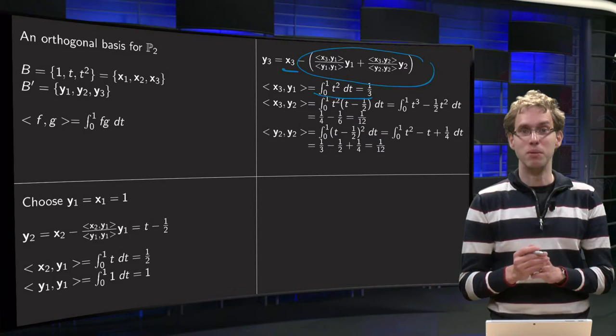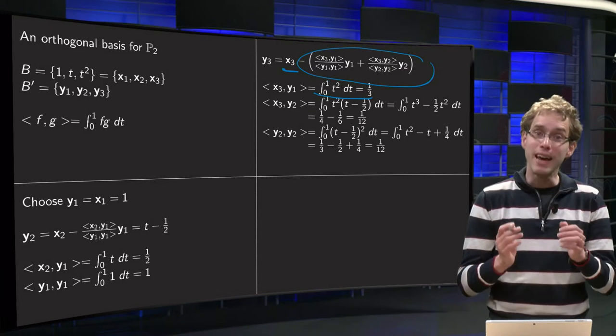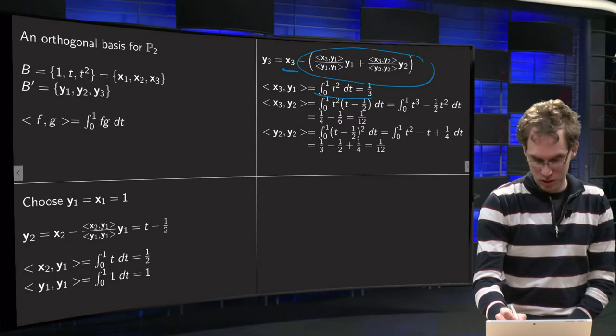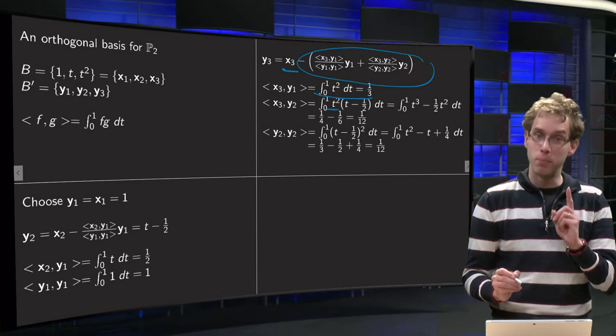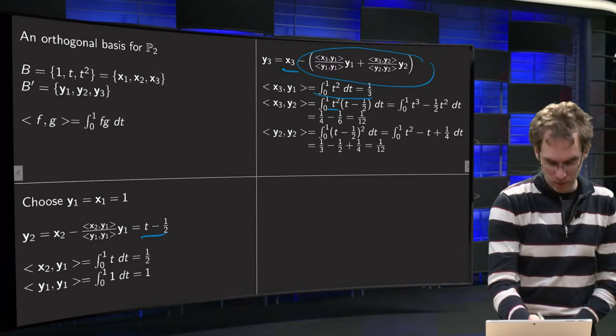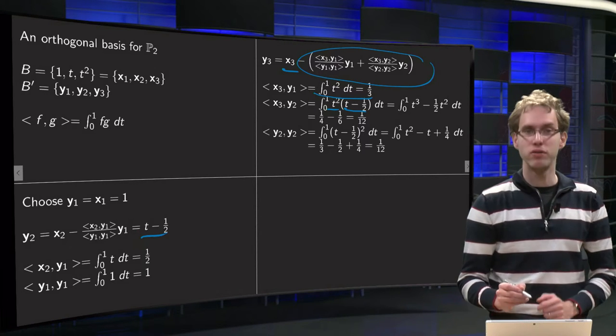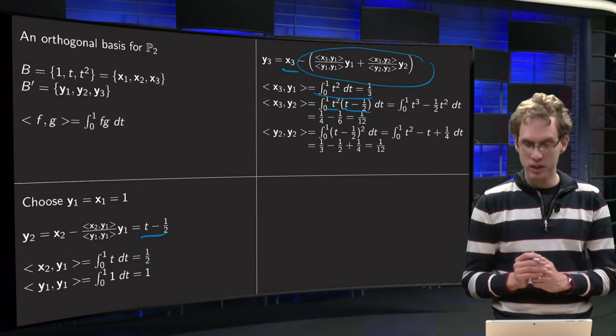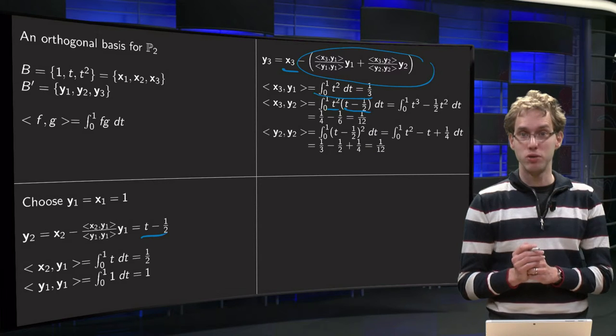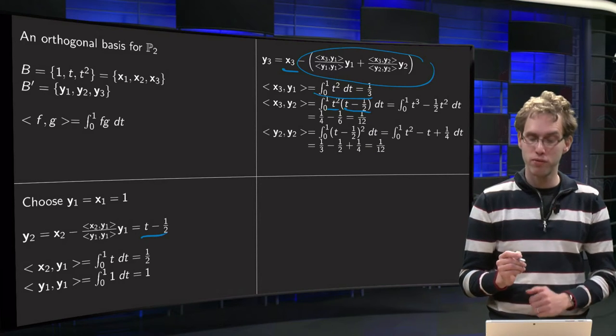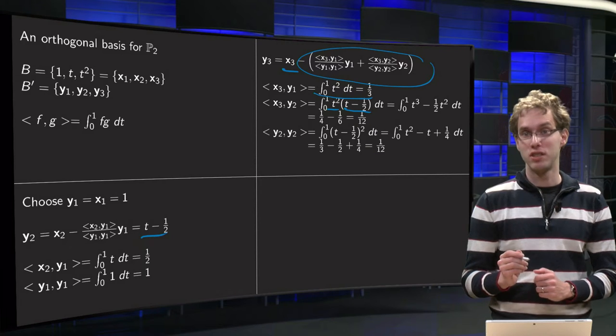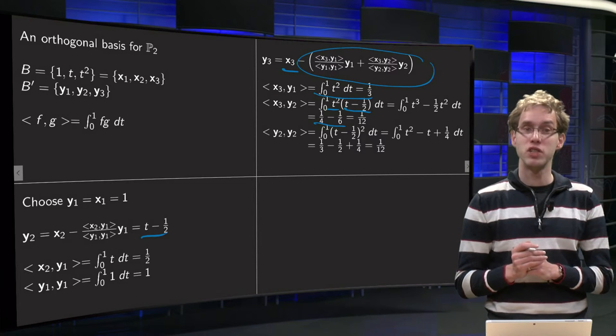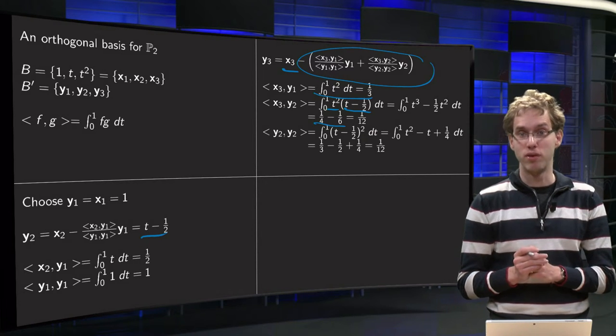Then the two which become slightly more nasty: inner product of x3, y2. Our x3 equals t squared, and our y2, remember, take the new one, so take the y2 times t minus one half. Work out the brackets, you get t cubed minus one half t squared. Integrate: one fourth t to the power 4, between 0 and 1 yields 1 over 4, minus one sixth t to the power 3 yields minus one sixth. So 1 over 4 minus 1 over 6, 3 over 12 minus 2 over 12 equals 1 over 12.